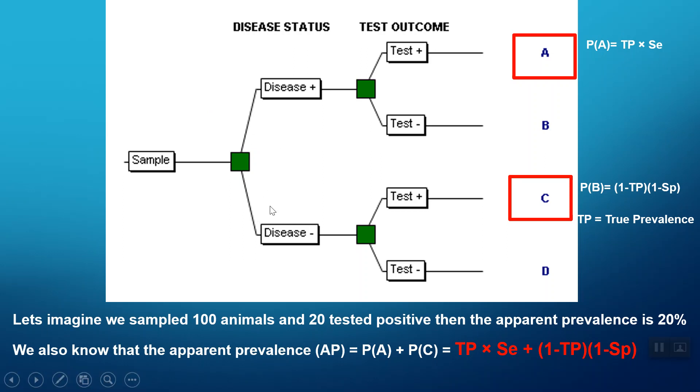Similarly, the probability a negative animal tests positive is one minus the true prevalence multiplied by one minus the specificity. So we're just subbing in here: true prevalence times the sensitivity plus one minus the true prevalence times one minus the specificity.